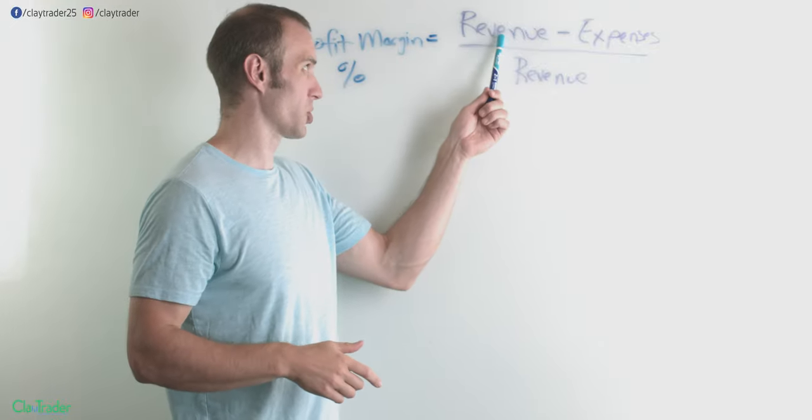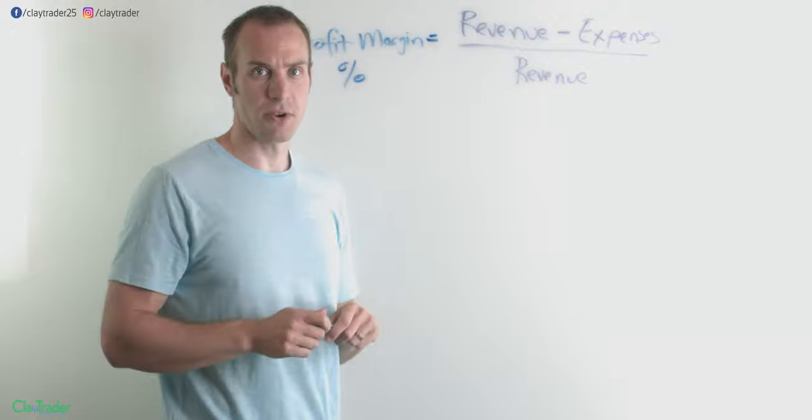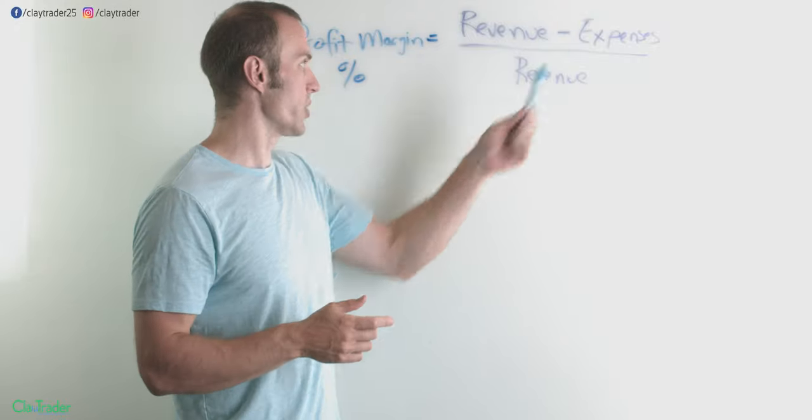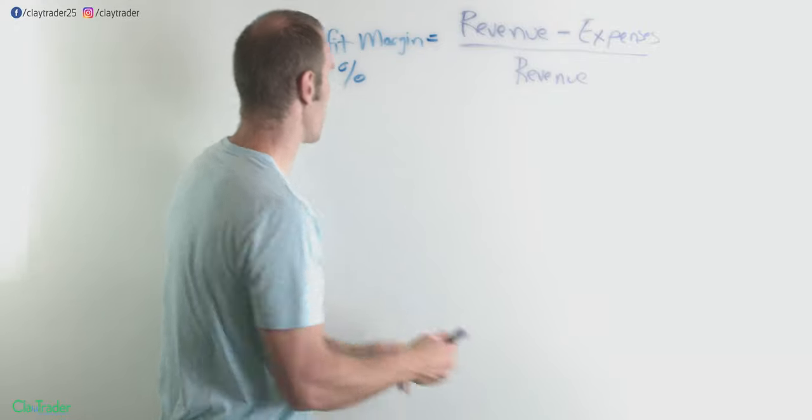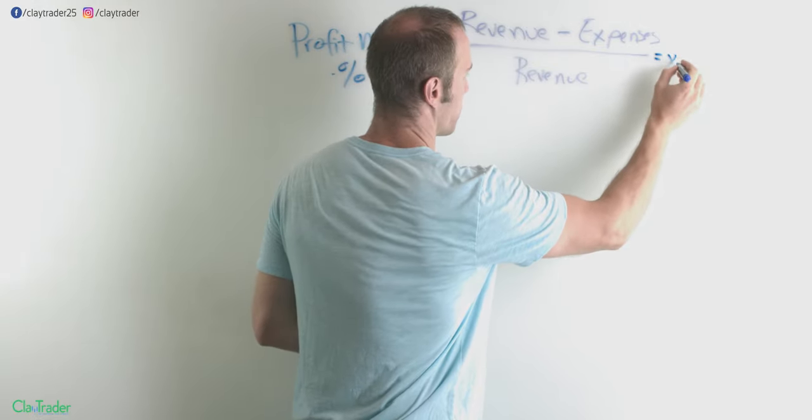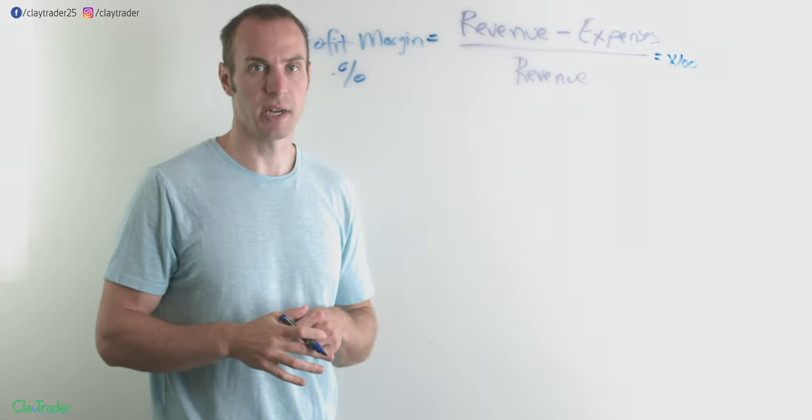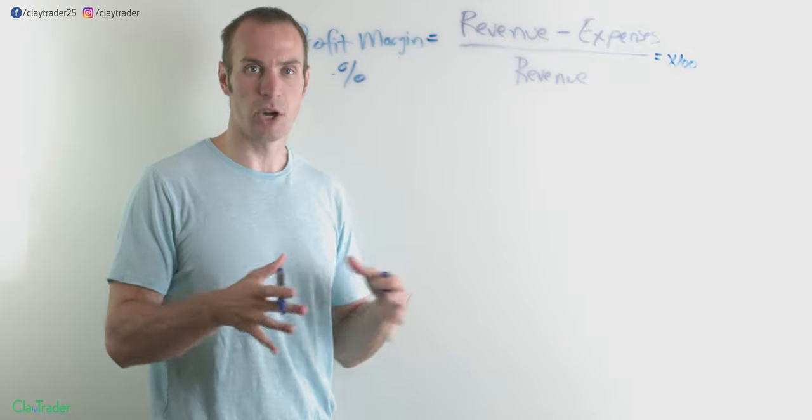And again, if you're not really exactly sure, most people know what expenses mean but unsure about revenue, just go and watch that video from last week. So you do that calculation and then of course, because it is, remember, based as a percentage, whatever that gives you, you want to multiply it by 100 to convert it into a percentage. So that is how a profit margin is calculated.